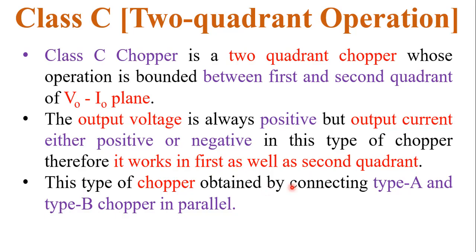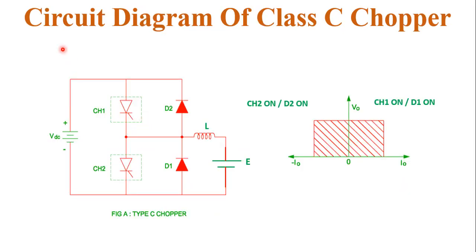Class C chopper is obtained by connecting Class A and Class B chopper in parallel. In the circuit diagram of Class C chopper, VDC is the source voltage. We use two choppers CH1 and CH2, implemented using SCRs. We also use two diodes D1 and D2. At the load side, we use an inductor and a load battery E.